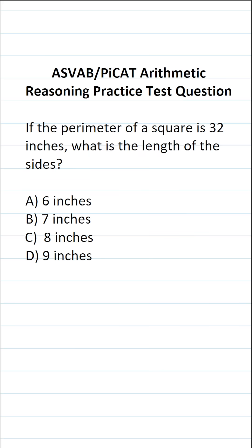On the ASVAB and PiCat, you're not given a reference sheet or a calculator. For that reason, you have to commit some basic formulas to memory, including how to calculate the perimeter of a square.